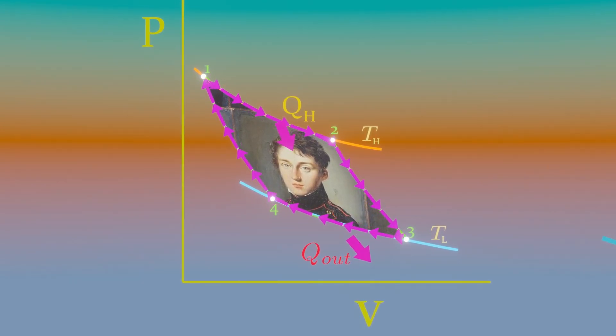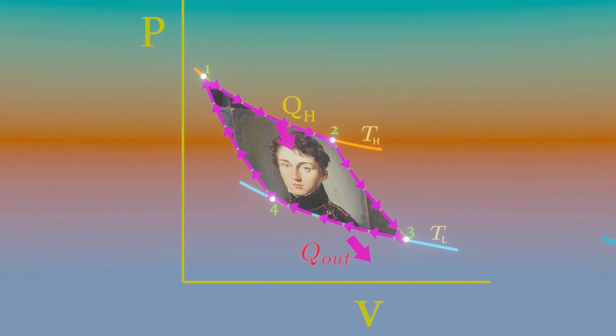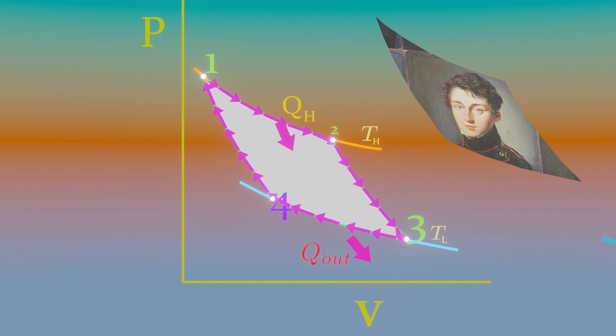On a PV diagram, the area under the process curve represents the boundary work for internally reversible processes. We see that the area under curve 1-2-3 is the work done by the gas during the expansion part of the cycle, and the area under curve 3-4-1 is the work done on the gas during the compression part of the cycle. The area enclosed by the path of the cycle is the difference between these two and represents the net work done during the cycle.